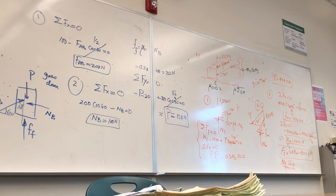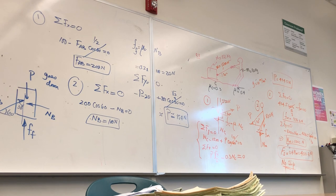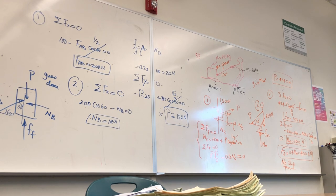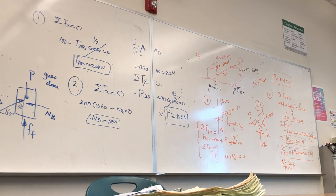To summarize: just follow the logic. Draw the free body diagram, then understand the problem statement to detect whether equilibrium exists or needs to be verified. That's it.